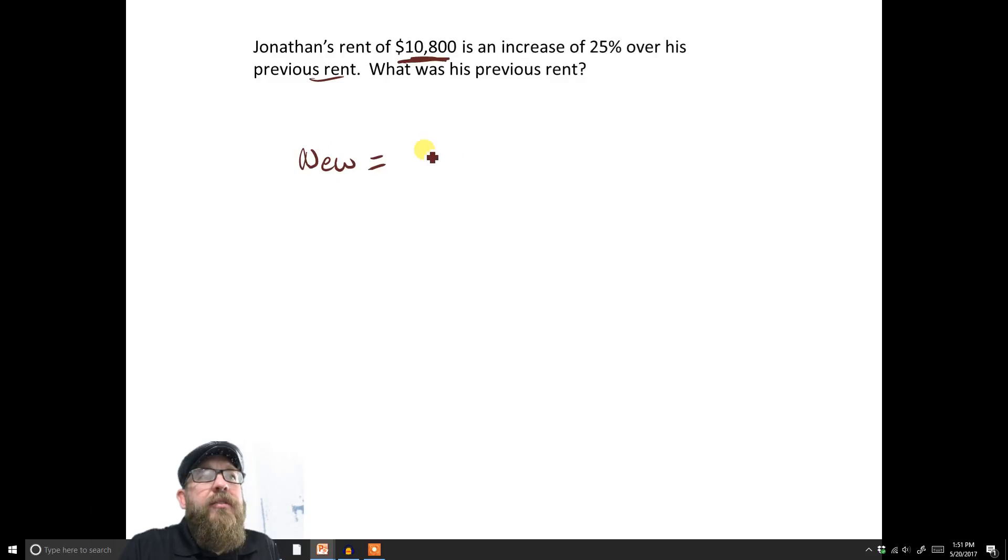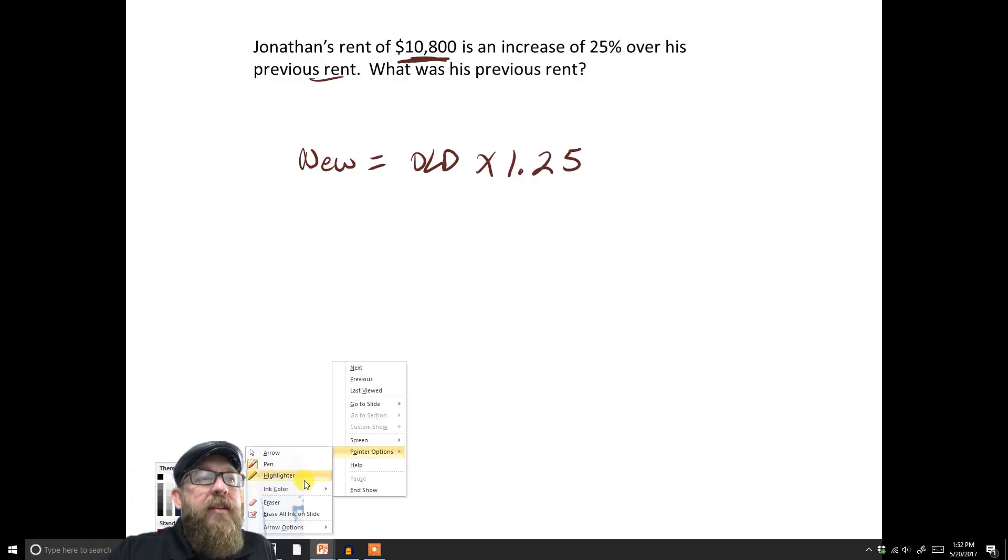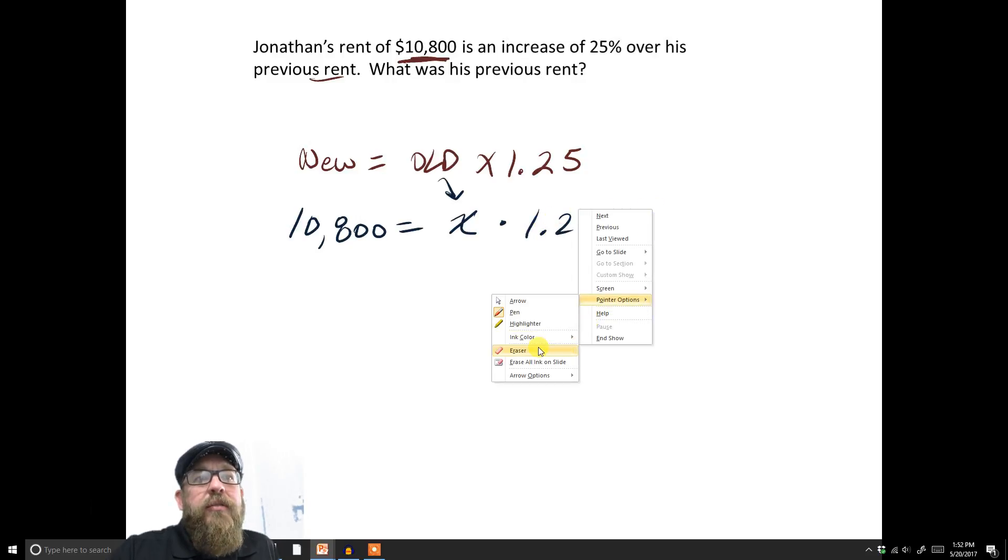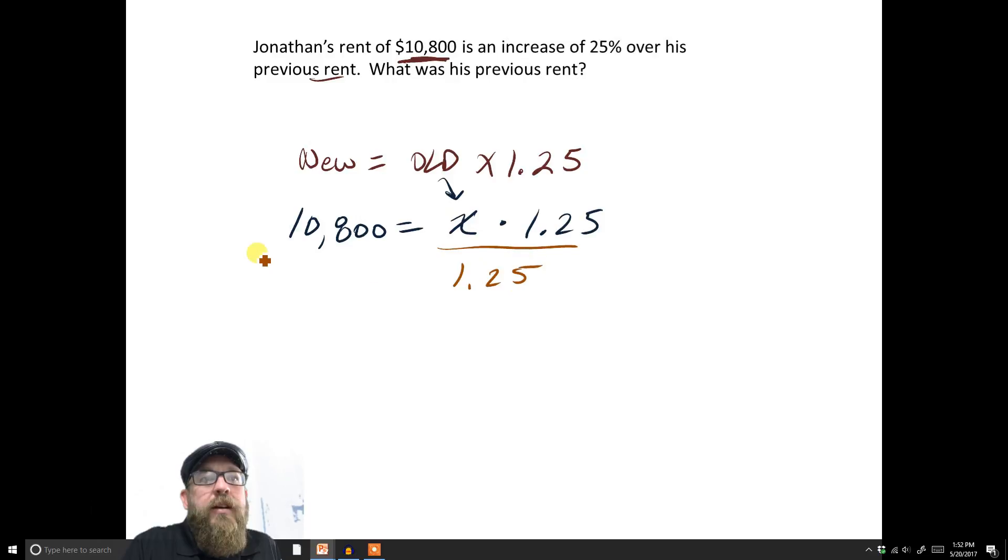Now let's write the equation. His new rent, here's how we find his new rent. His new rent is his old rent with a 25% increase. So if I did a 25% increase, that would be 1.25. So that's my equation right there. That's how I would figure out the relationship between the new and the old rent. Now I know what the new rent is. The new rent is $10,800, and the old rent is what I've got to figure out. So I've got $10,800, and that's the thing I don't know, which we'll go ahead and call x, times 1.25.